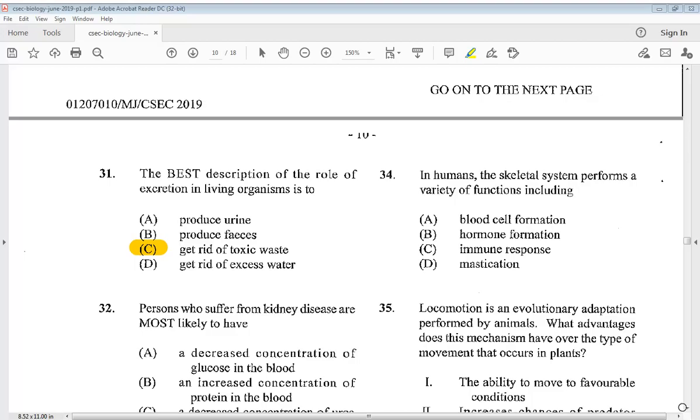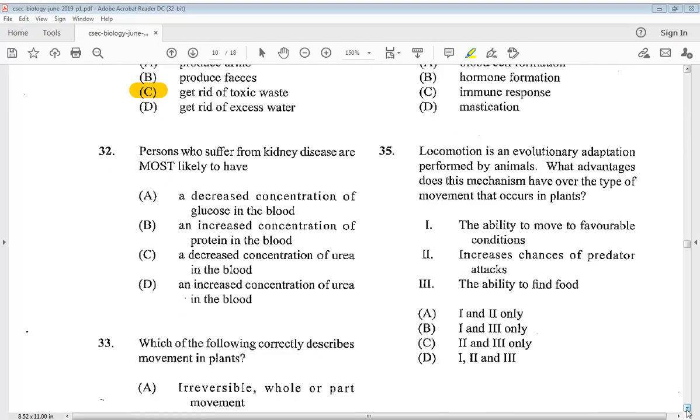Let's get into question 32. Persons who suffer from kidney diseases are most likely to have: A a decreased concentration of glucose in the blood, B an increased concentration of protein in the blood, C a decreased concentration of urea in the blood, or D an increased concentration of urea in the blood. So the answer for 32 we know it would be D.